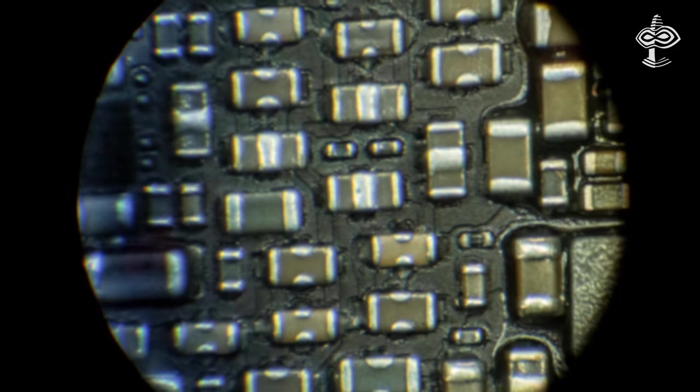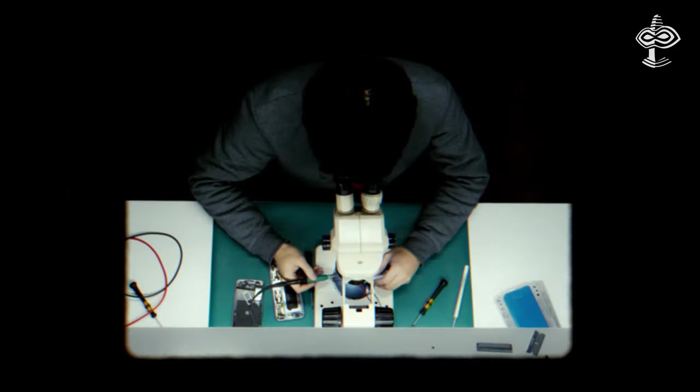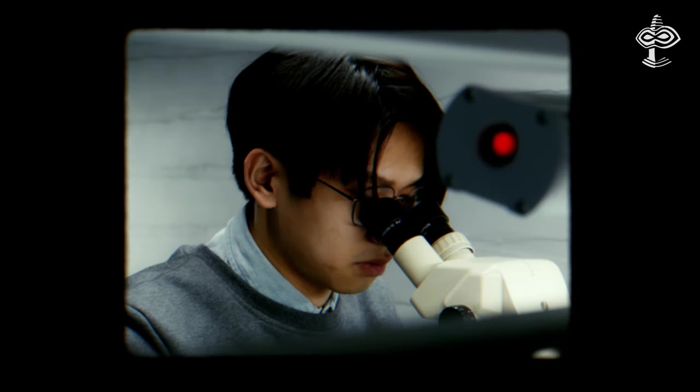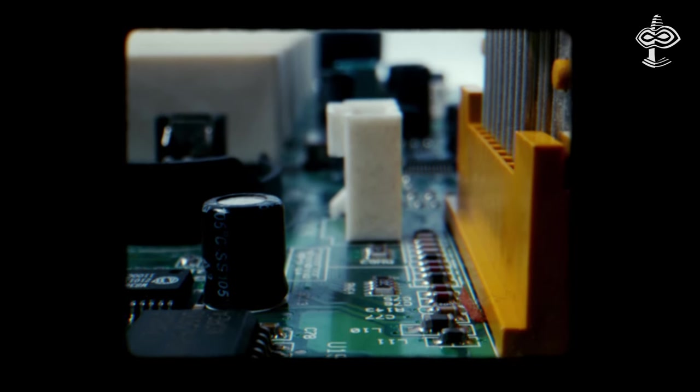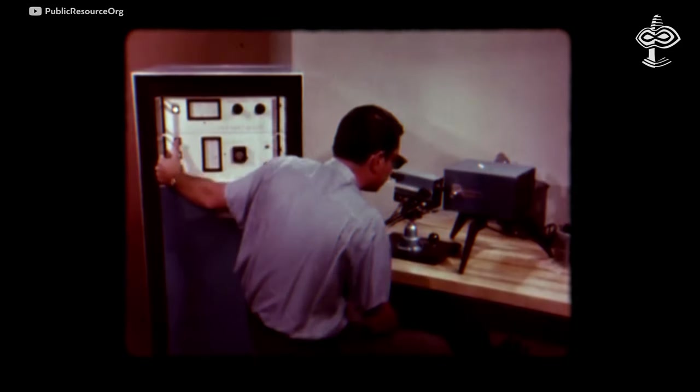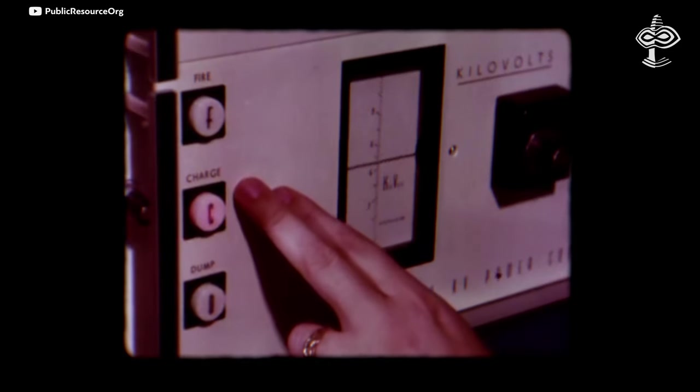A semiconductor is a material with electrical conductivity between that of a conductor, like copper and an insulator, such as glass. Our current electronic devices wouldn't exist without them.